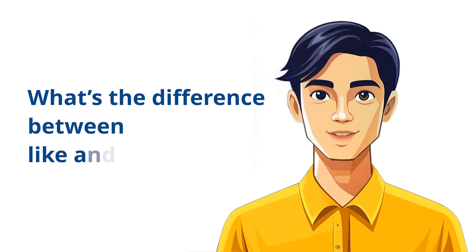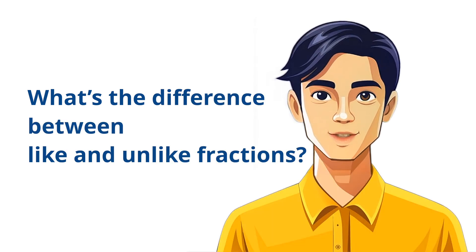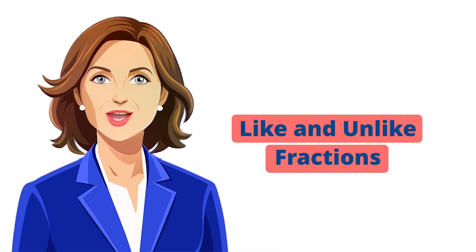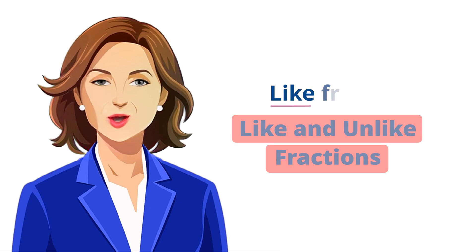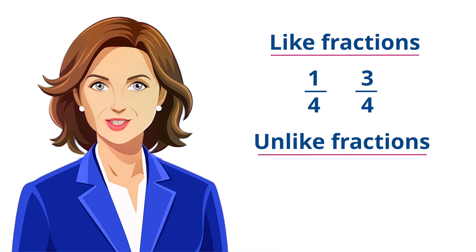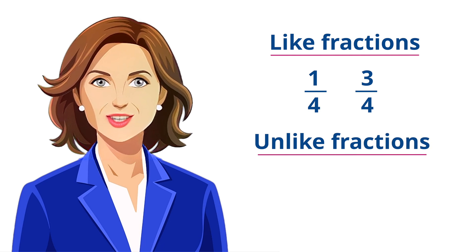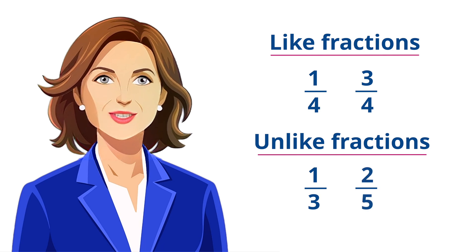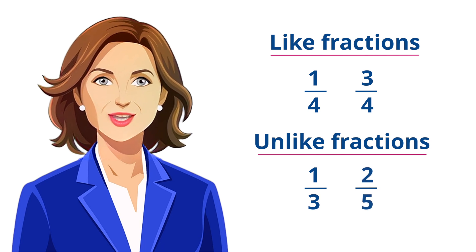I've heard of like and unlike fractions — what's the difference between them? Like fractions have the same denominator, such as one over four and three over four, making them easier to work with. Unlike fractions have different denominators, like one over three and two over five, and they need to be converted to like fractions before adding or subtracting them.